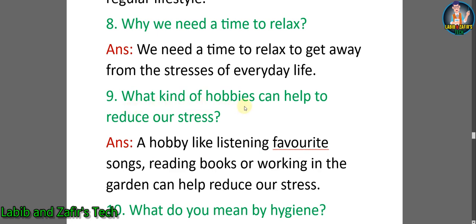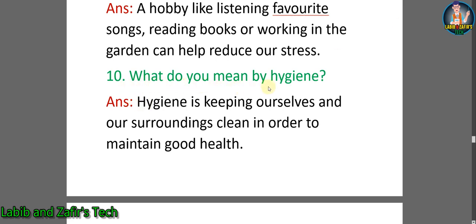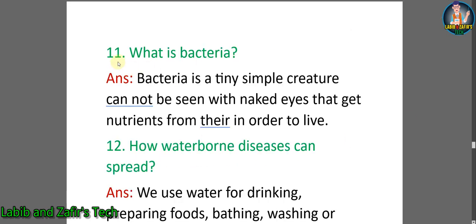Number nine: what kind of hobbies can help to reduce our stress? Answer: a hobby like listening to favorite songs, reading books, or working in the garden can help reduce our stress. Number ten: what do you mean by hygiene? Answer: hygiene is keeping ourselves and our surroundings clean in order to maintain good health. Number eleven: what is bacteria? Answer: bacteria is a tiny simple creature that cannot be seen with naked eyes and gets nutrients from other bodies in order to live.